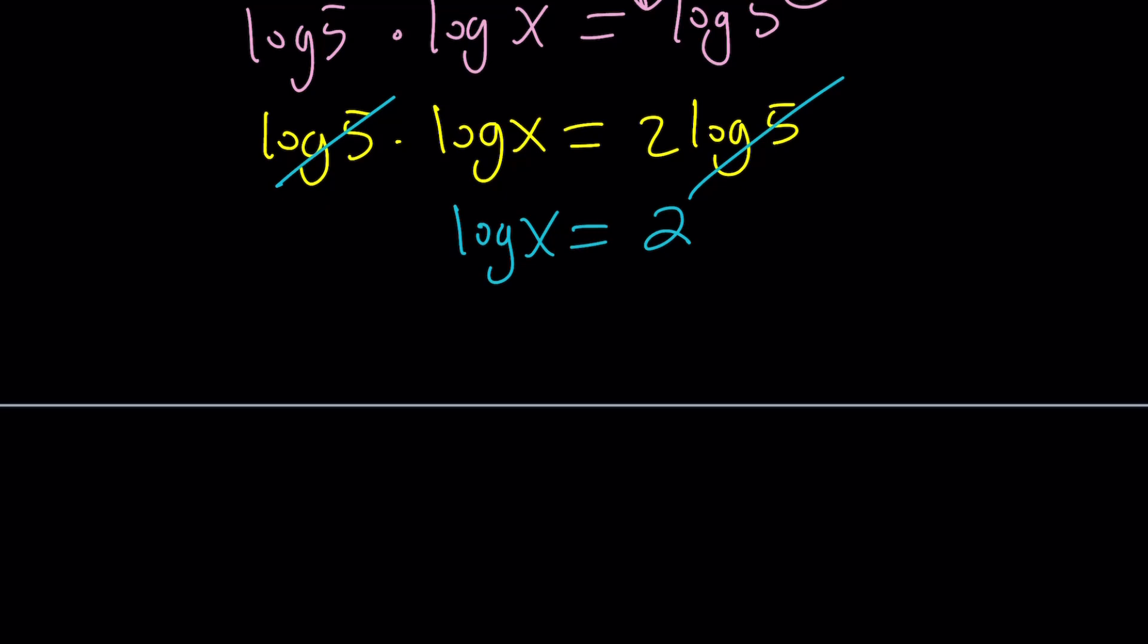And this implies that x equals 100. If you don't know what this is going to turn into, again, you can use our awesome property. 10 to the log x equals 10 to the second. But remember, 10 to the power log something is something. x equals 10 squared, which is 100.